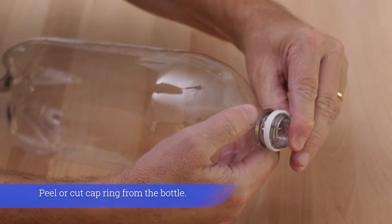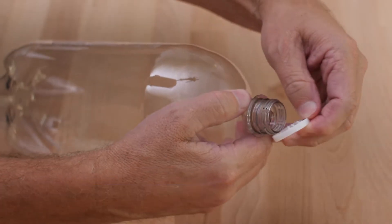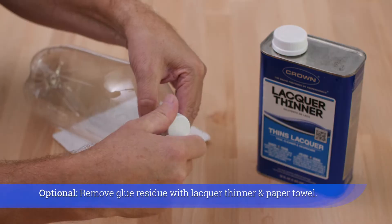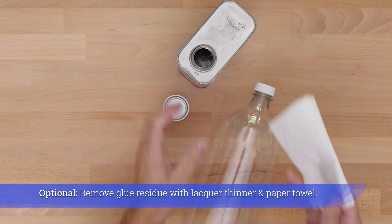Peel or cut cap ring from the bottle. Optional: remove glue residue with lacquer thinner and paper towel.